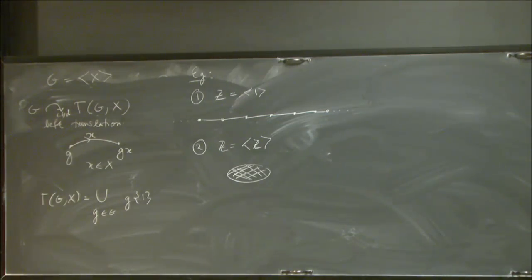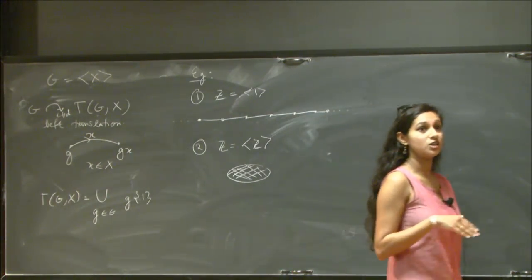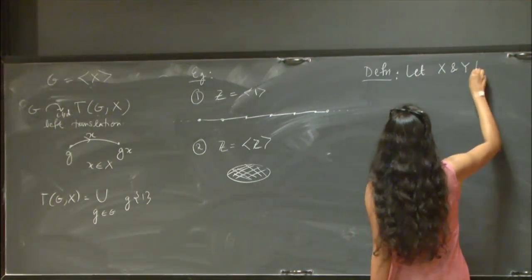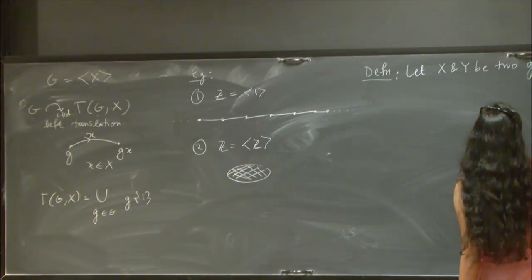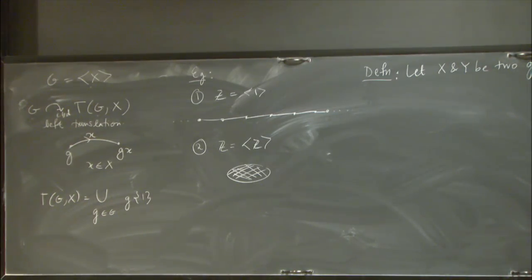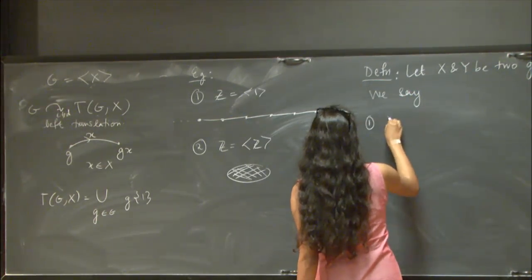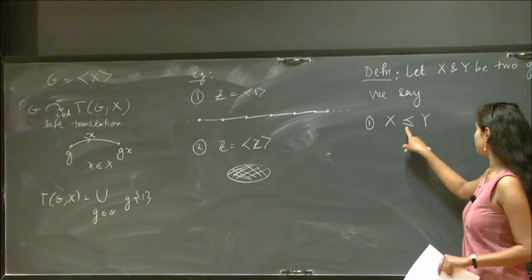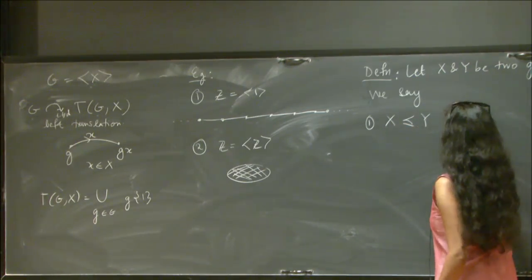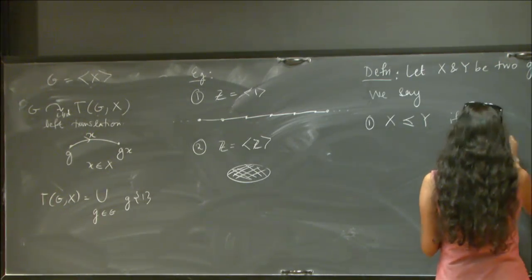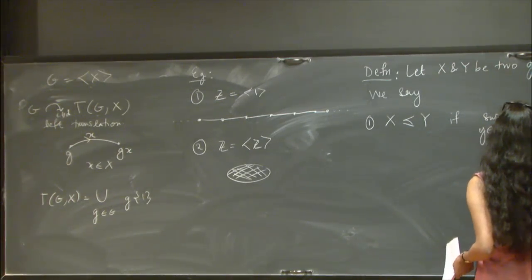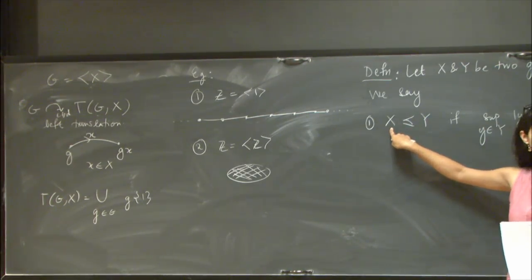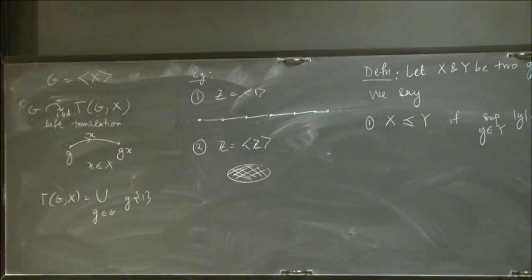So we'd like to formalize when one generating set is better than another. The definition is: let X and Y be two generating sets of G. We say X is dominated by Y — written with a curved ≤ symbol — if the supremum, taken over elements of Y rewritten in the language of X, is finite. This means every element of the generating set Y can be rewritten in terms of X generators with a uniform bound on how many generators it takes.